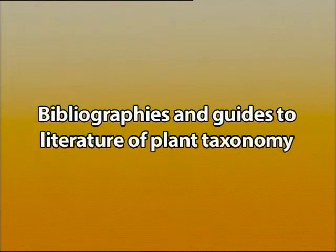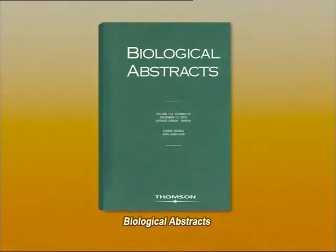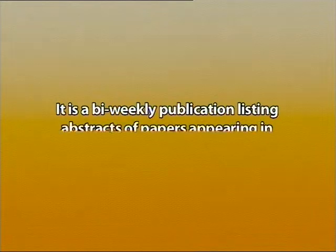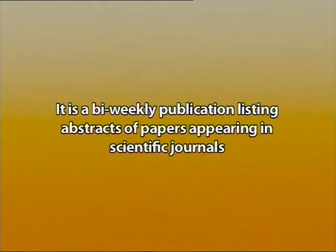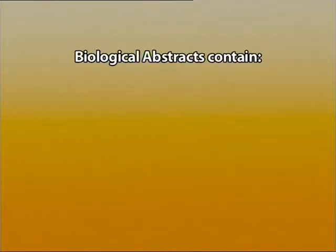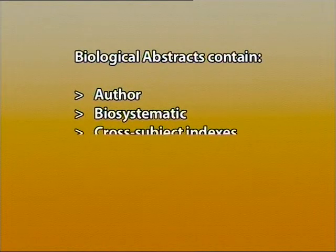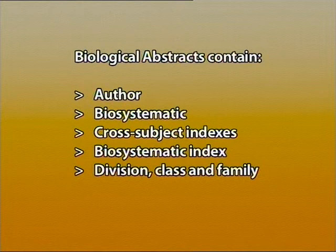After discussing these indexes, let us now discuss the second source of taxonomic literature — Bibliographies and Guides to the Literature of Plant Taxonomy. A lot of research work is published throughout the world, and there is always a need for supporting bibliographies, indexes, or guides that can consolidate this huge taxonomic information. These help in tracking down information about a particular taxonomic group covering a certain period of time. The most useful bibliographic aid is Biological Abstracts. Its publication was started in 1929. It is a bi-weekly publication listing abstracts of papers appearing in scientific journals. Each issue contains author, biosystematic, and cross-subject indexes, as well as a biosystematic index arranged by division, class, and family.